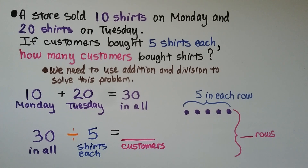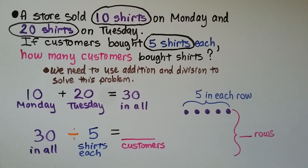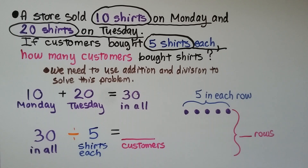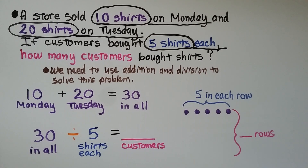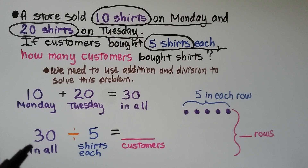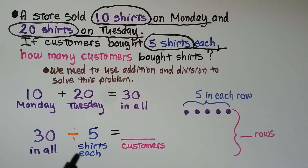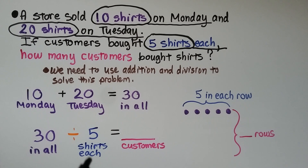A store sold 10 shirts on Monday and 20 shirts on Tuesday. If customers bought 5 shirts each, how many customers bought shirts? Let's circle our important numbers and underline other important information: 10 shirts on Monday, 20 shirts on Tuesday, and customers bought 5 shirts each. We need to use addition and division. First, we find how many in all: 10 plus 20 is 30. Our dividend is 30, and we'll do 30 divided by 5.